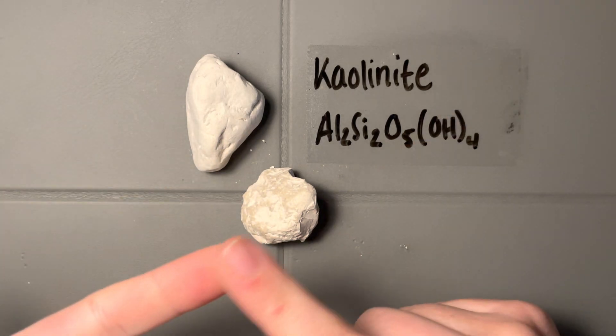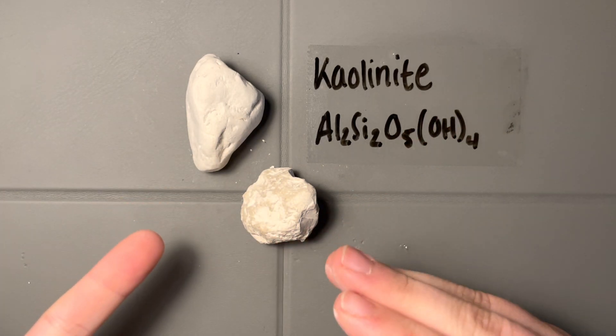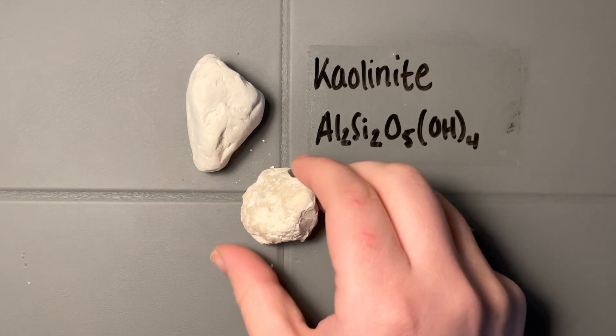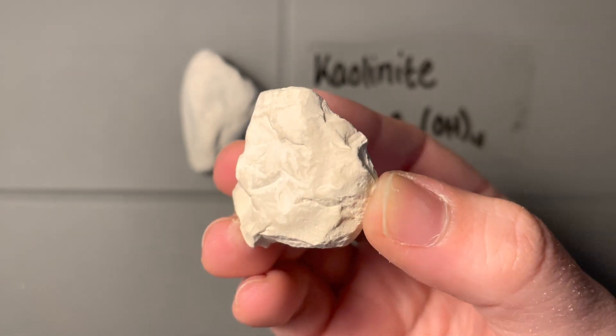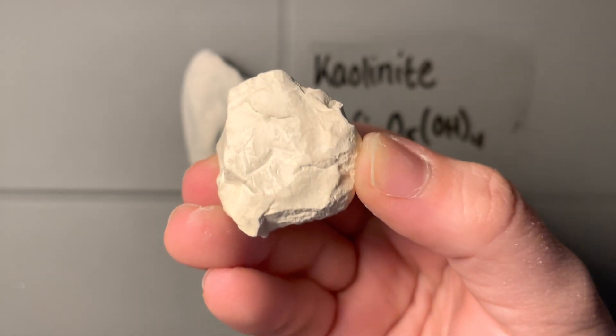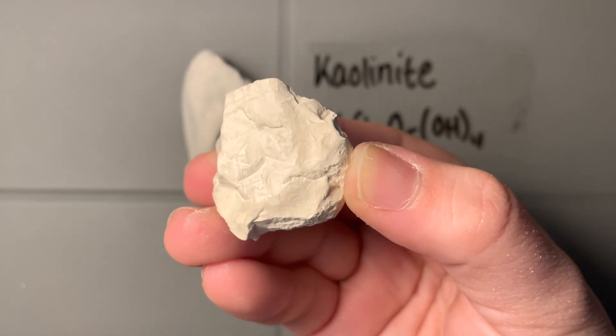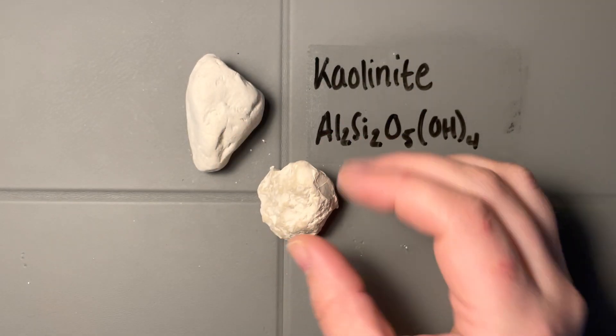And so what did we do? We did luster, we did hardness, specific gravity, the crystal habit of these massive blocks like this. This one we can kind of see where we've got these weathered surfaces. Maybe they're a little bit more compact. There's a little bit of shine. But really, the earthiness is the dead giveaway.